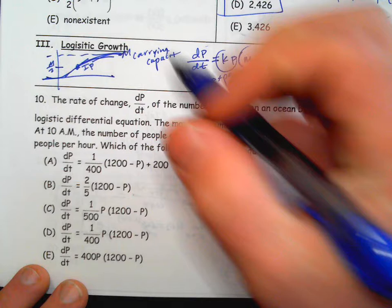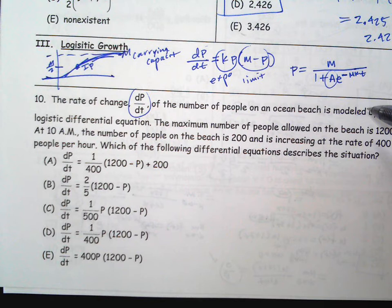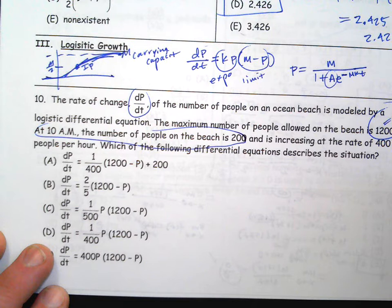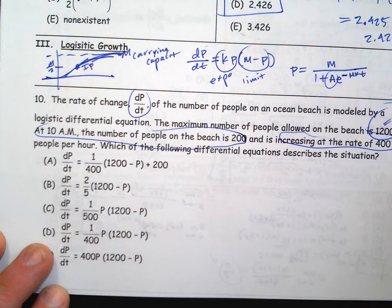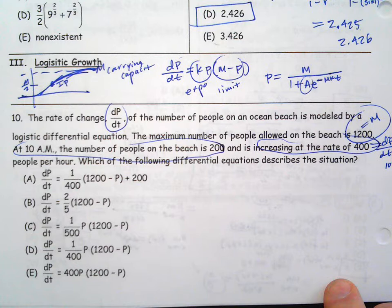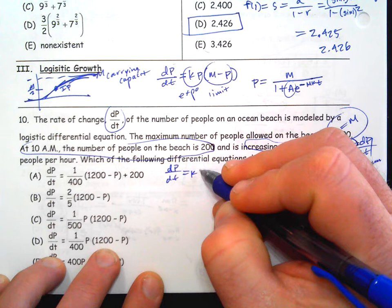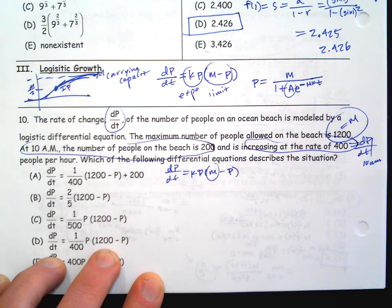Problem 10 says: the rate of change dP/dt of the number of people on ocean beach is modeled by the logistic differential equation. The maximum number of people allowed is 1200 — that's your carrying capacity. At 10 AM, the number of people is 200 — that's your initial condition — and it's increasing at 400 people per hour, so dP/dt equals 400 at that time. We know dP/dt equals K times P times (M minus P), so we have the M value. We need to figure out K using: 400 equals K times 200 times (1200 minus 200).